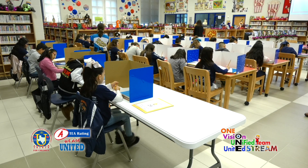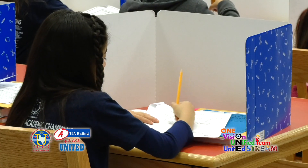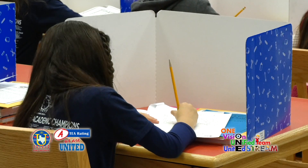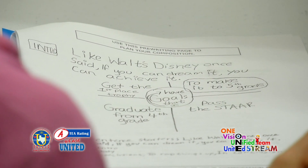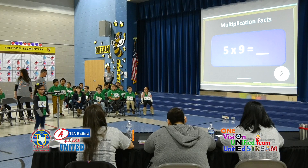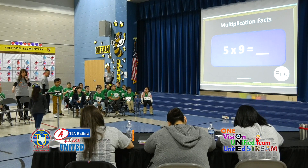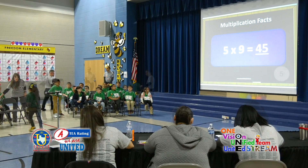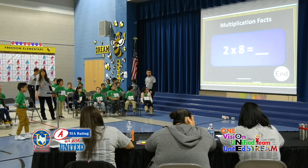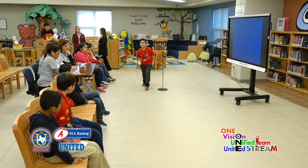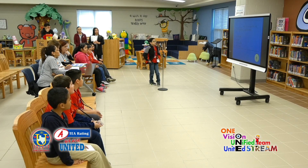Students who have participated at the respective campuses can represent their school at the district competition if they consistently place in the three campus contests. Each time a student places, the child earns points according to the place he or she earned: three points for first place, two points for second place, and one point for third place.